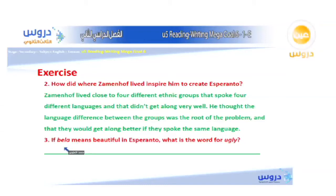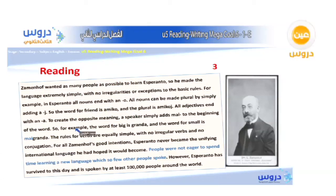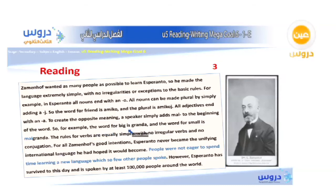Question 3: If 'bella' means beautiful in Esperanto, what is the word for ugly? To create the opposite meaning, a speaker simply adds 'mal' to the beginning of the word. For example, the word for big is 'granda' and the word for small is 'mal granda'. So going back to the question — 'bella' means beautiful, and the opposite of beautiful is ugly. The answer is 'malbela'.